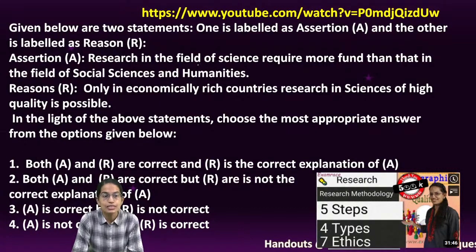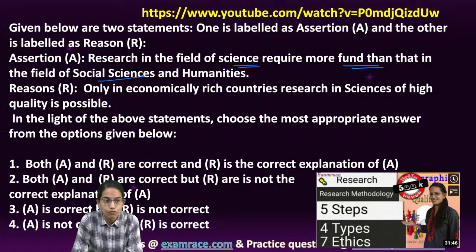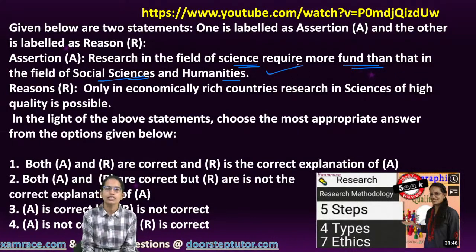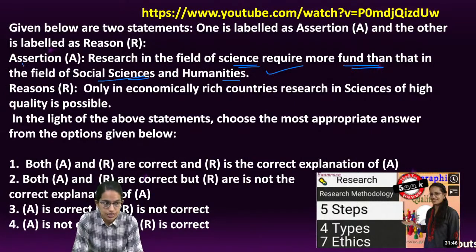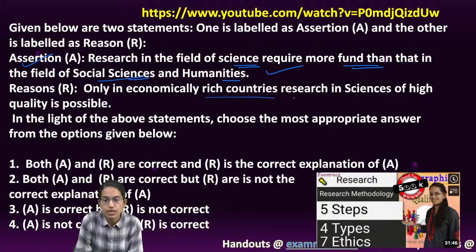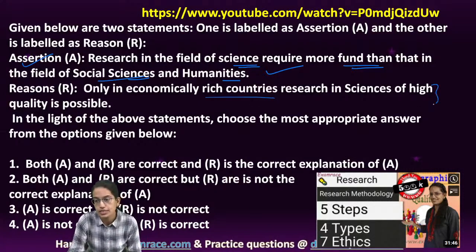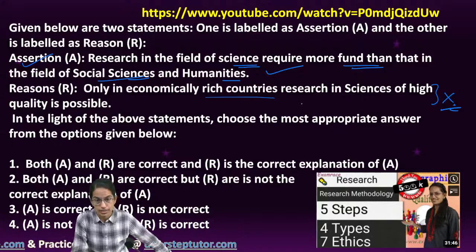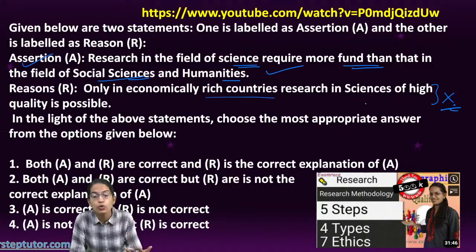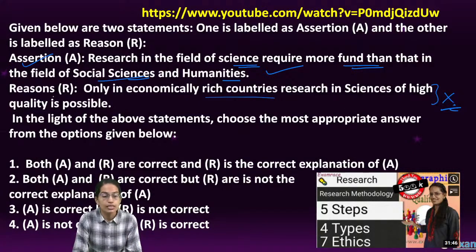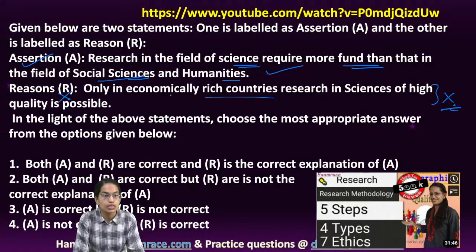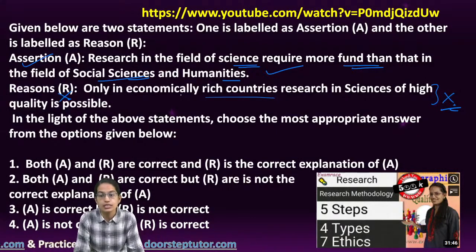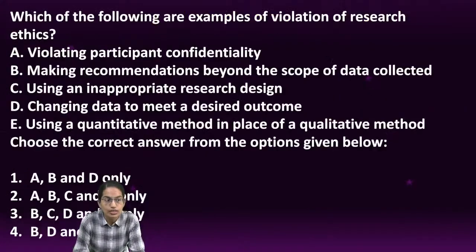The next question says: research in the field of science requires more funds than in the field of social sciences and humanities. That is correct because in sciences, you need lab settings, equipment, and other things. So the assertion is correct. The reason says only in economically rich countries can science research be quality research - definitely not. We have seen developing nations bring breakthrough developments in scientific research. So the reason is not the correct explanation for the assertion.